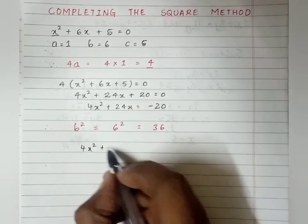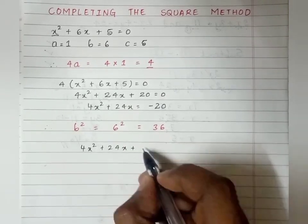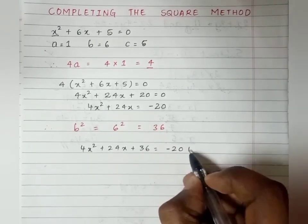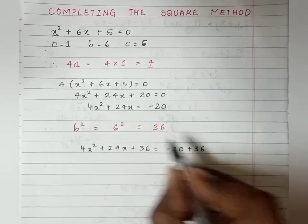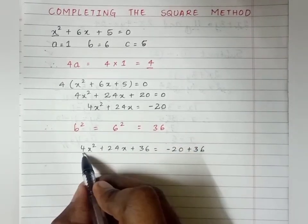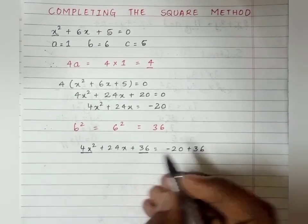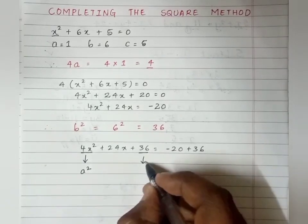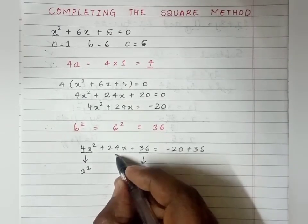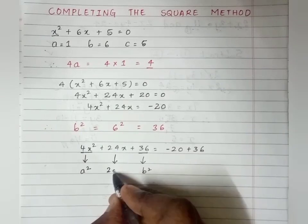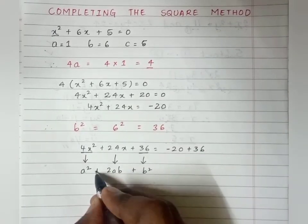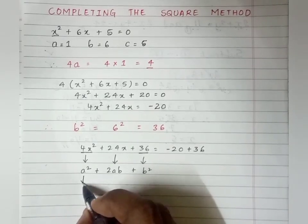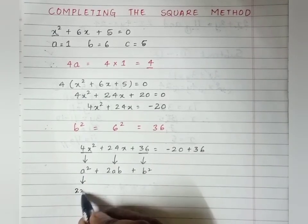Now add 36 on both LHS and RHS. You get 4x² + 24x + 36 = -20 + 36. Now observe that the left side is of the form a² + 2ab + b².